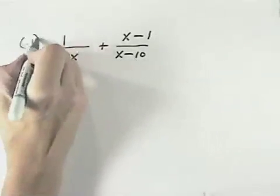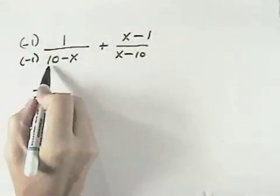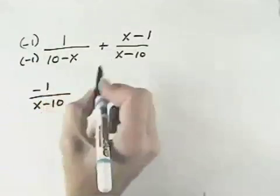But if we multiply the first fraction by negative 1 over negative 1, it becomes negative 1 over the 10 becomes negative, the x becomes positive, so we can express it as x minus 10.